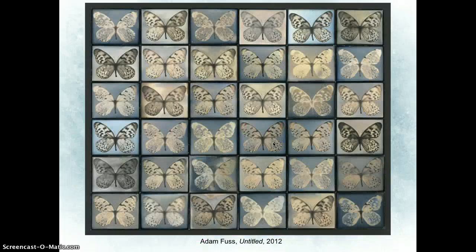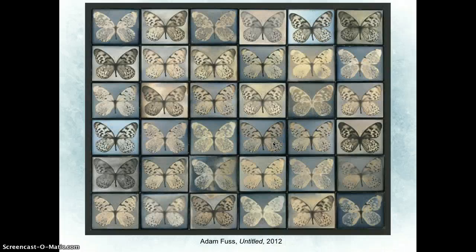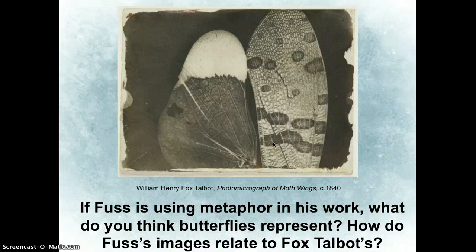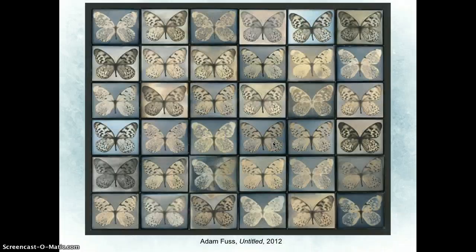Let's talk more about his ideas of metaphor. These are a series of photograms Fuss did of butterflies. This image is actually from William Henry Fox Talbot — moth wings in 1840 — to bring it full circle. And these are butterfly photograms made in 2012. Here's the question I want you to write down: if Fuss is using metaphor in his work and thinks photograms are more expressive because they have less information, what do you think butterflies represent? How do Fuss's images relate to Fox Talbot? How is this image metaphorical? Look up 'metaphor' if you need to, and come prepared with a written answer.